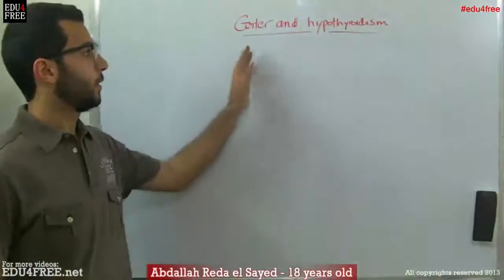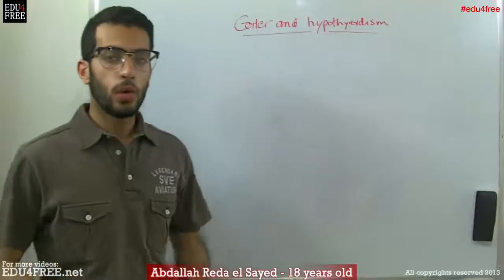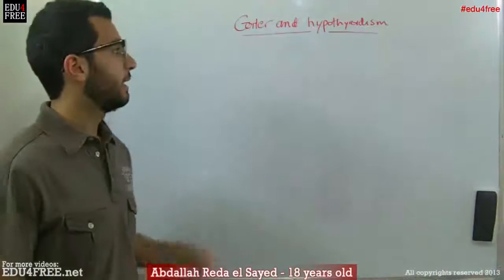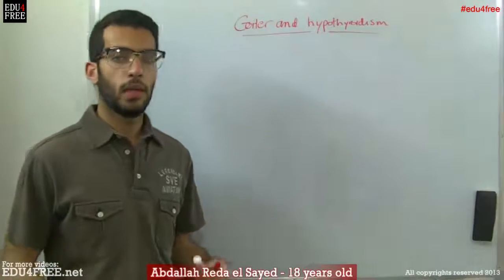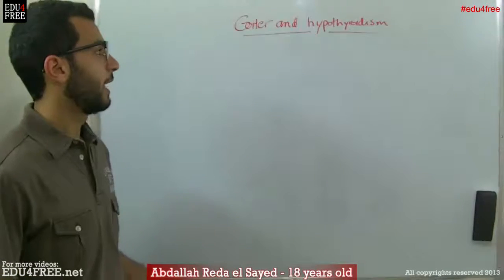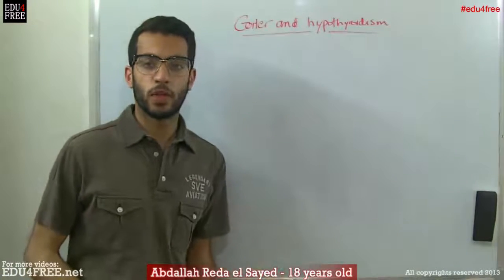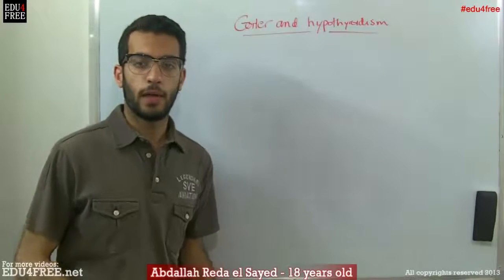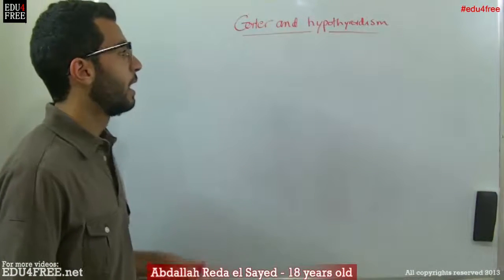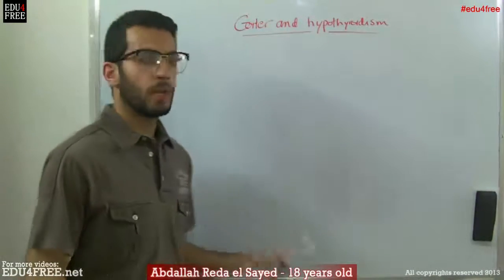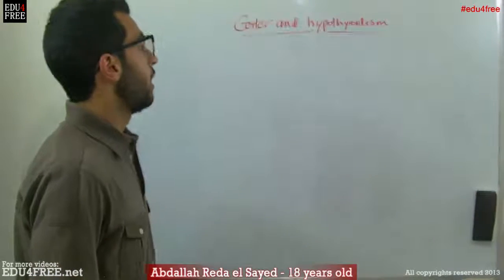Today we are going to talk about Goiter and Hypothyroidism. Goiter is the enlargement of the thyroid gland according to the unstable activity of the gland, and Hypothyroidism is the suppression of the thyroid gland or the decrease in the volume of the thyroid gland, also according to the unstable activities of the gland.